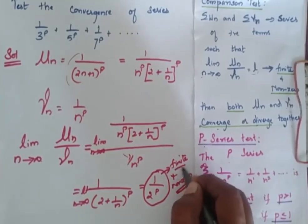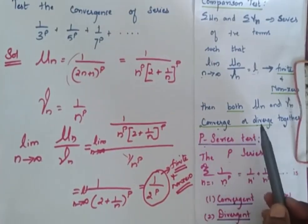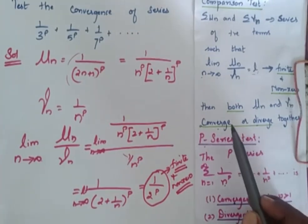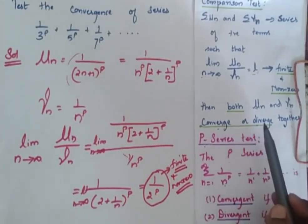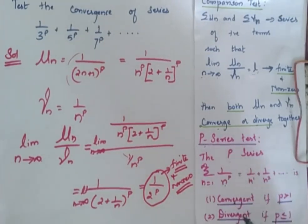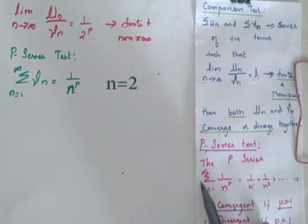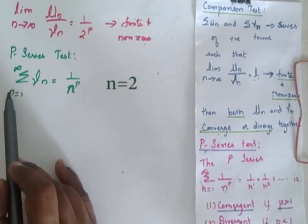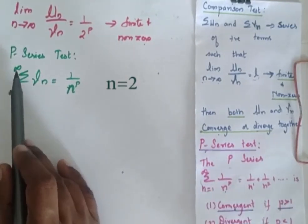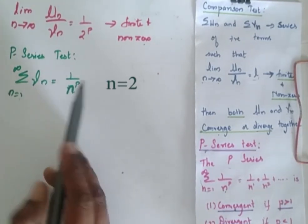Since the limit is finite and non-zero, UN and VN converge or diverge together. To check whether they converge or diverge we go for the P-series test, considering summation from N equals 1 to infinity of VN, which equals 1 by N power P.